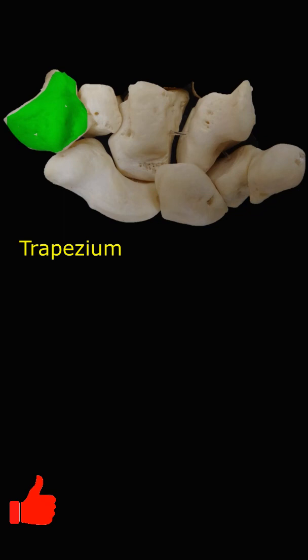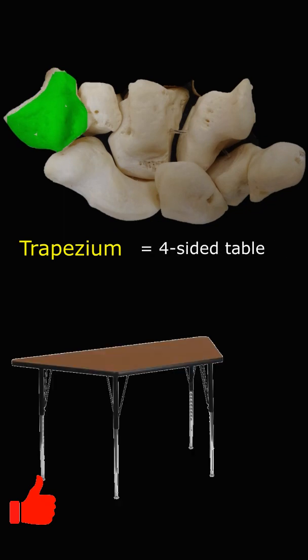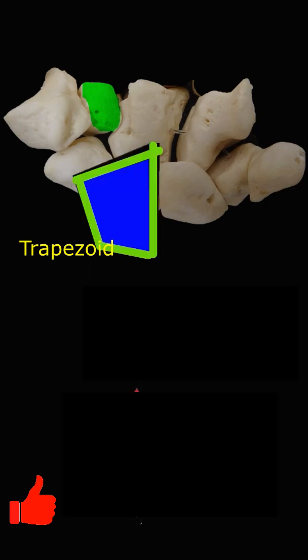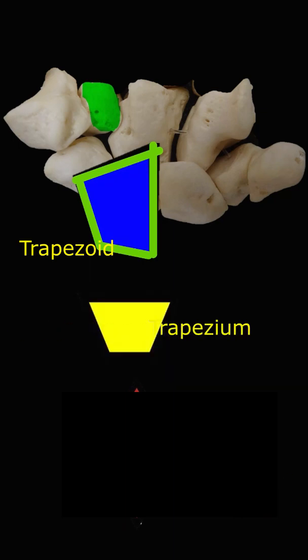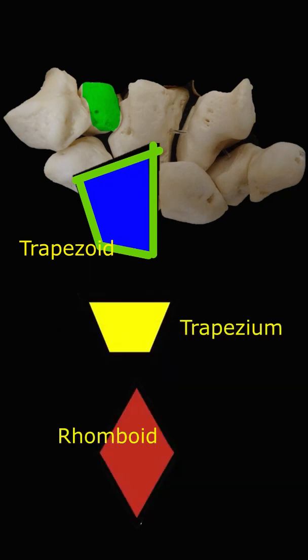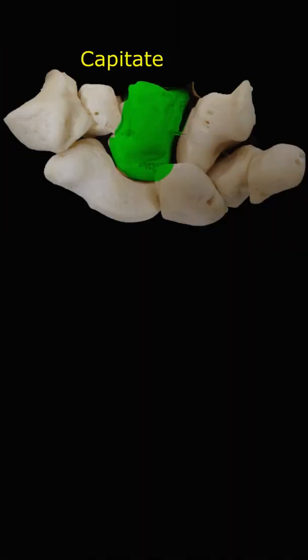The trapezium means having an irregular quadrilateral shape — literally a little dining table. The trapezoid means trapezium-shaped, technically a four-sided figure with no two sides parallel. The term trapezoid is often confused with trapezium in its sense of a quadrilateral figure having two sides parallel.